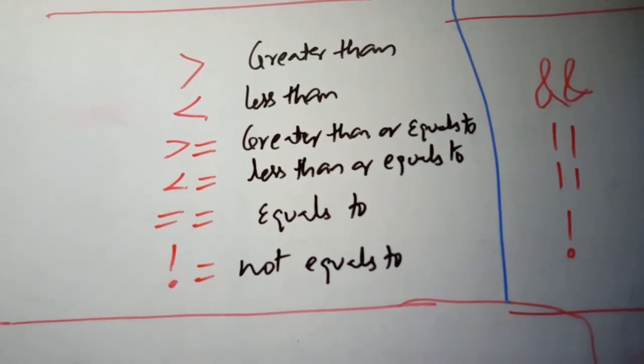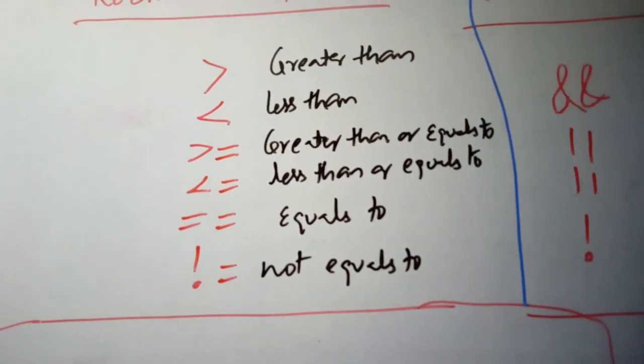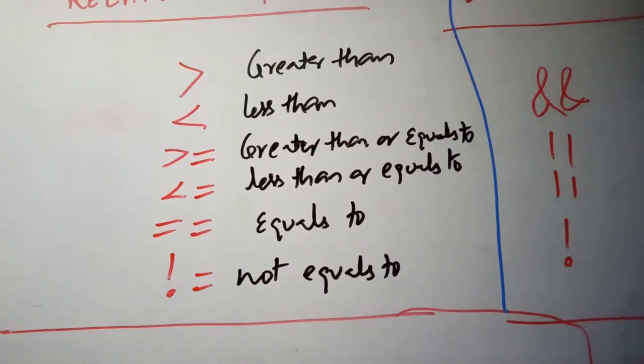Look at the equals to symbol, we have two symbols there, equal to, equal to. The single is equal to is assignment operator, don't forget that.